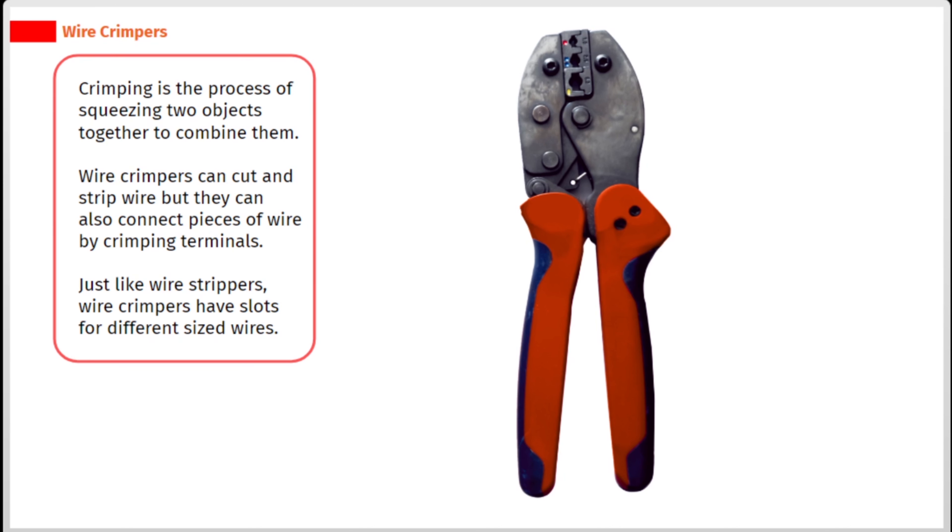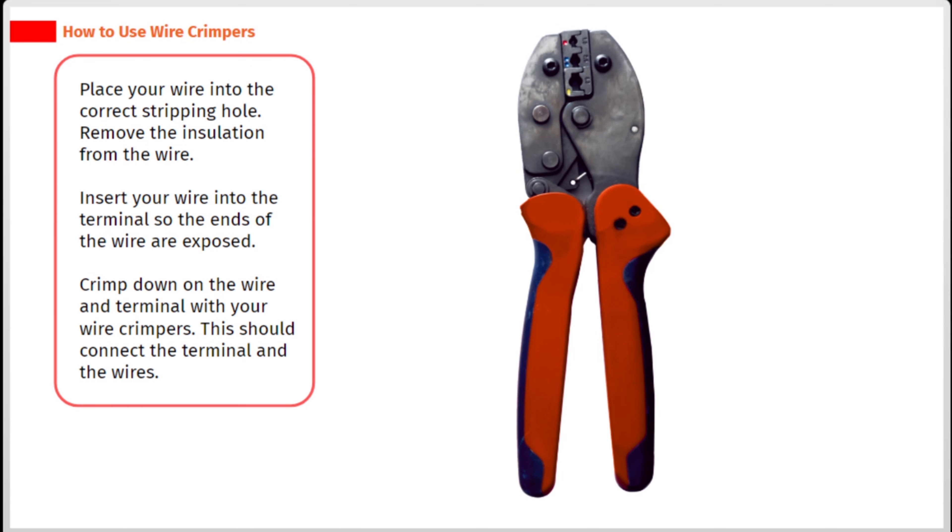Just like wire strippers, wire crimpers have slots for different sized wires. Place your wire into the correct stripping hole and remove the insulation from the wire.